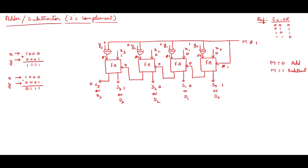Now let us compute the subtraction. With m=1 acting as the initial carry: 0 plus 0 plus 1 is 1, carry 0. Then 1 plus 0 plus 0 is 1, carry 0. Then 1 plus 0 plus 0 is 1, carry 0. Then 1 plus 1 plus 0 is 10 in binary, giving 0 with carry 1. That carry is discarded. The answer is 0111, which is 7. So 8 minus 1 is 7.